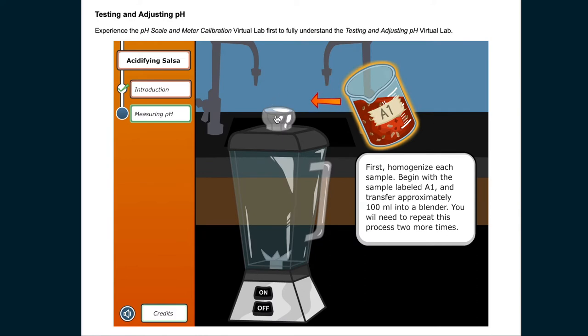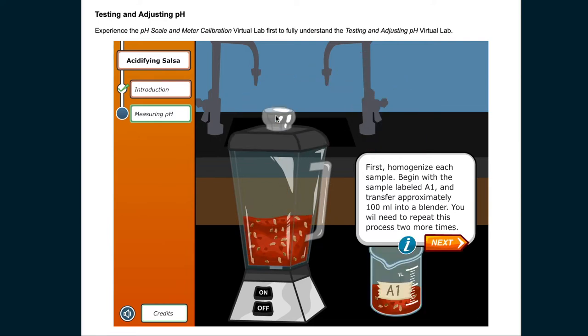First, homogenize each sample. Begin with the sample labeled A1 and transfer approximately 100 milliliters into a blender. You will need to repeat this process 2 more times.